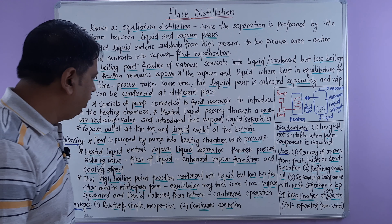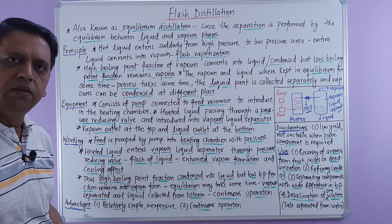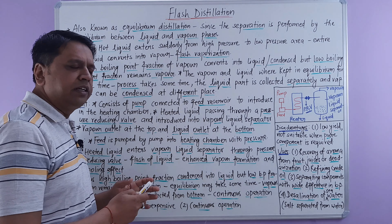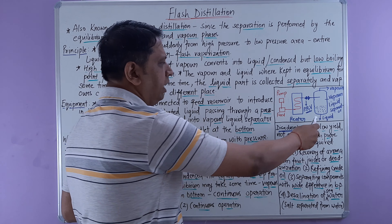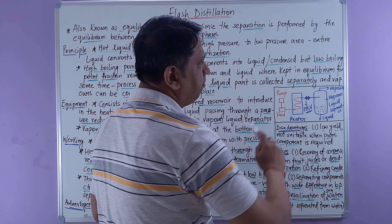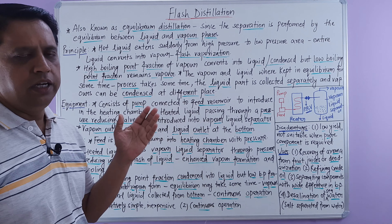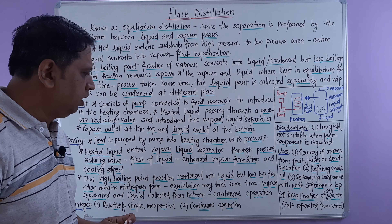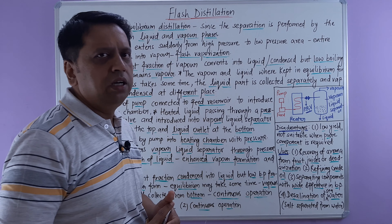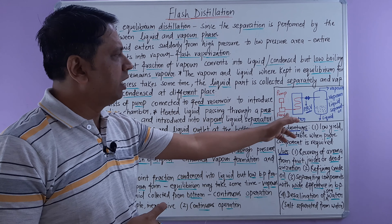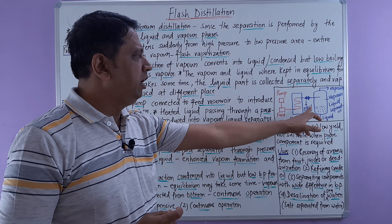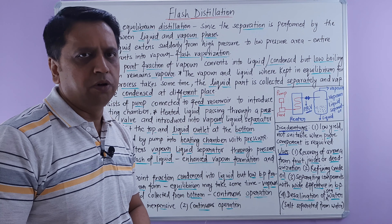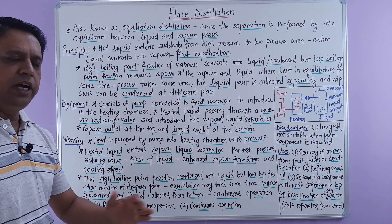Thus the high boiling point fraction condenses into liquid, while the low boiling point fraction remains in vapor form. Equilibrium may take some time, after which the vapors are separated and liquid is collected from the bottom. The vapors can then be condensed elsewhere. This may be a continuous operation where the pump continuously feeds liquid into the vapor-liquid separator for continuous product formation.